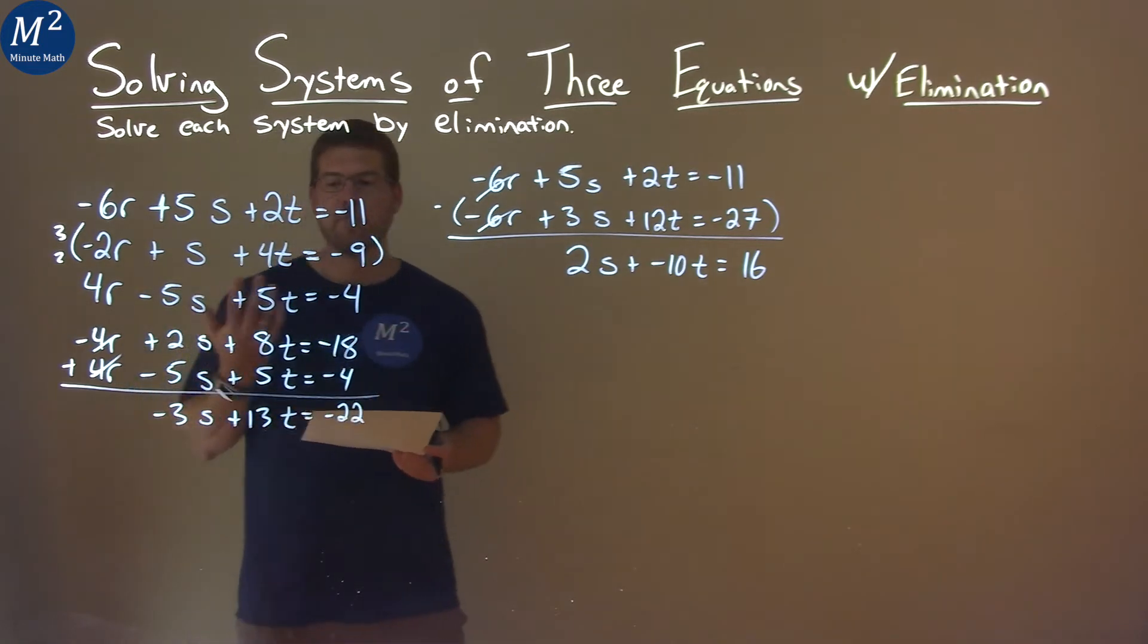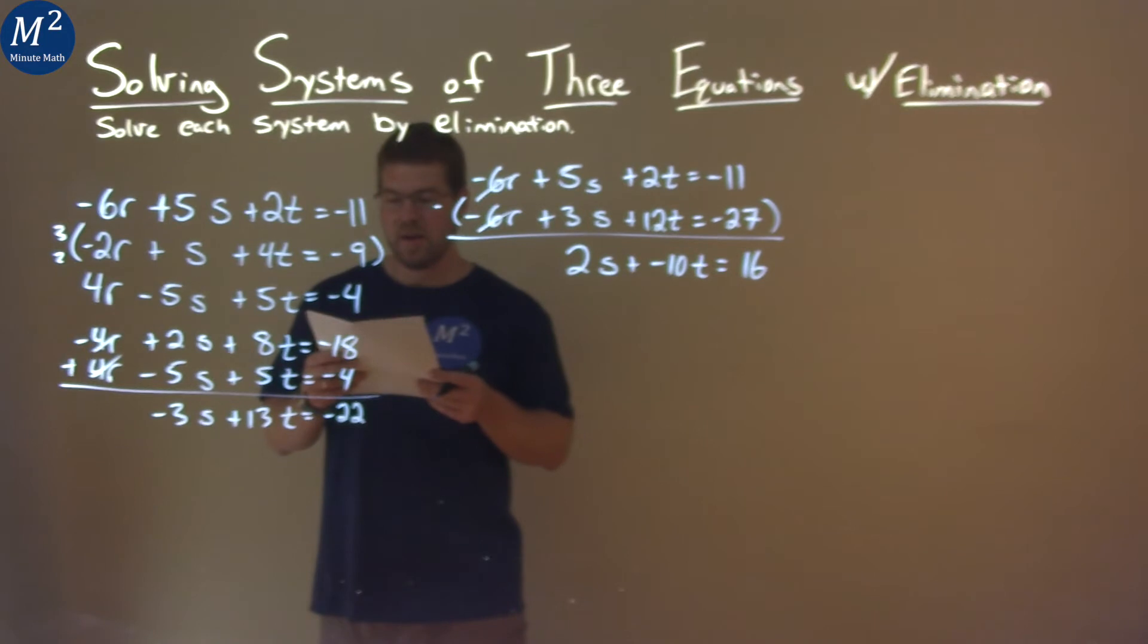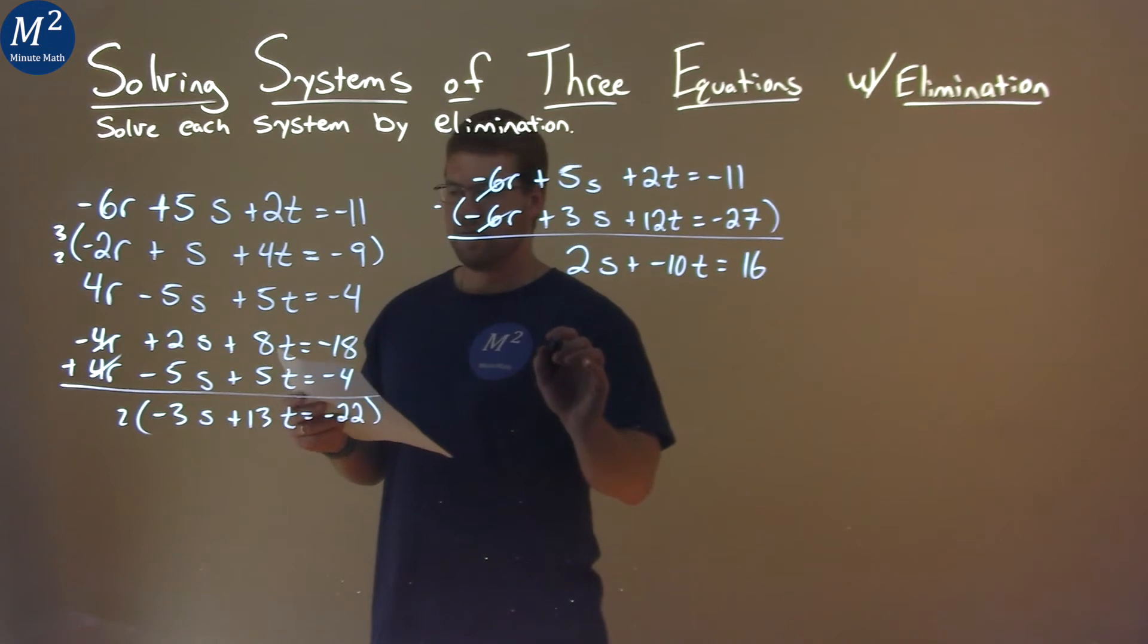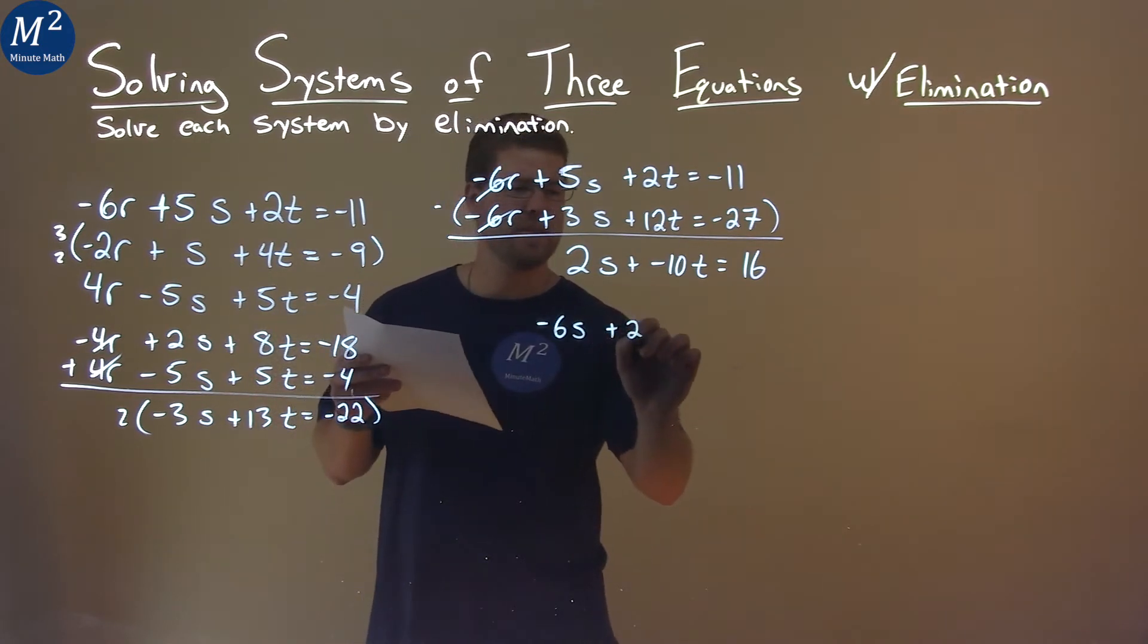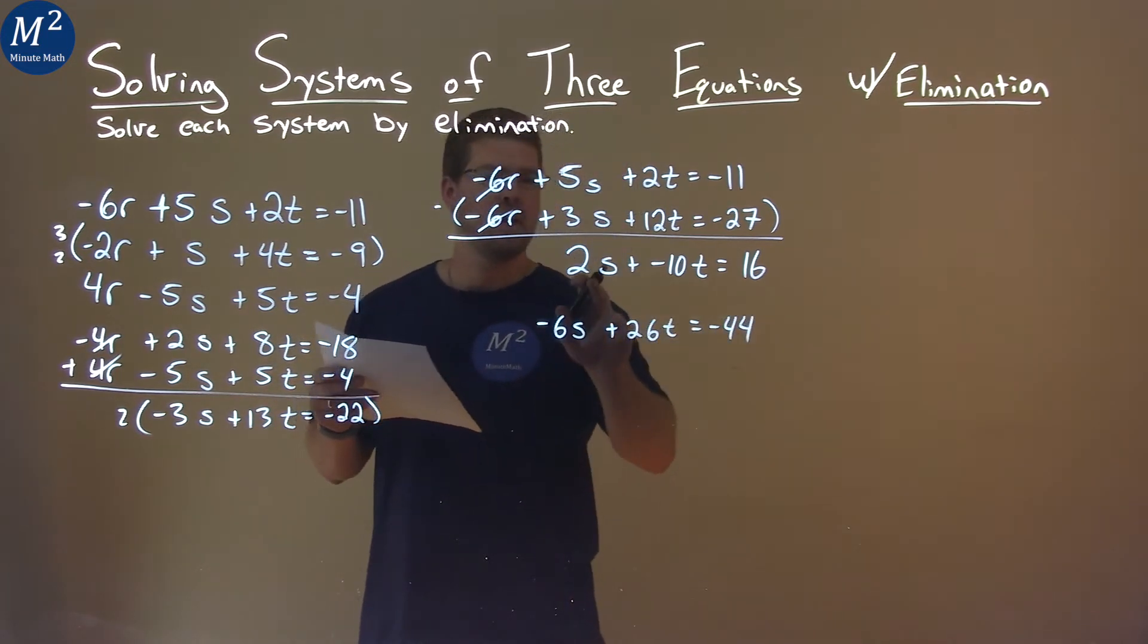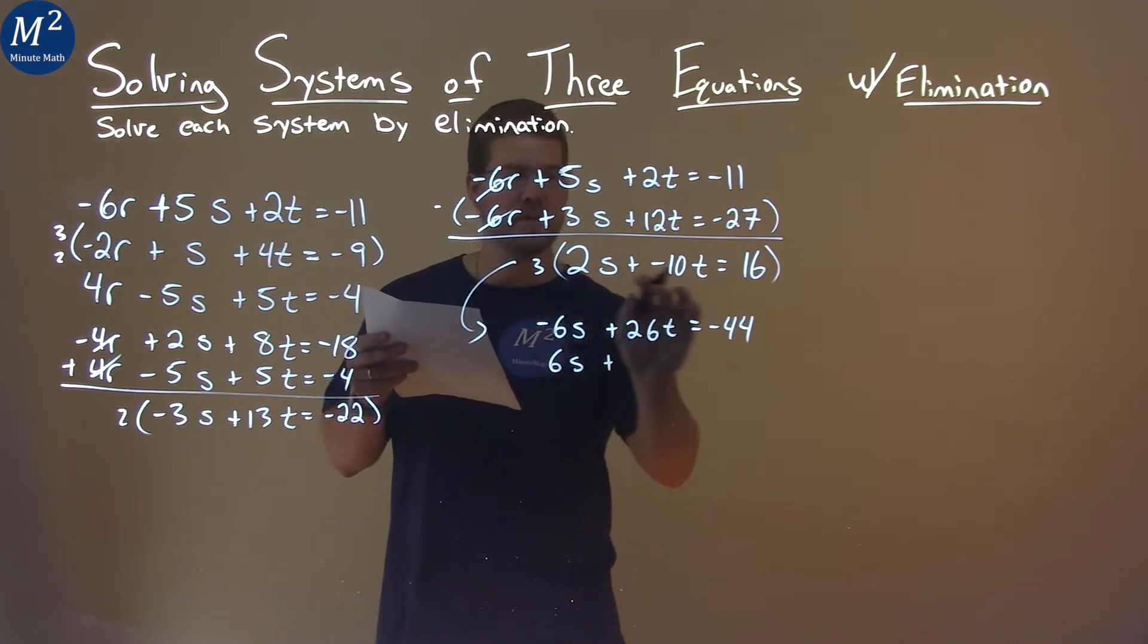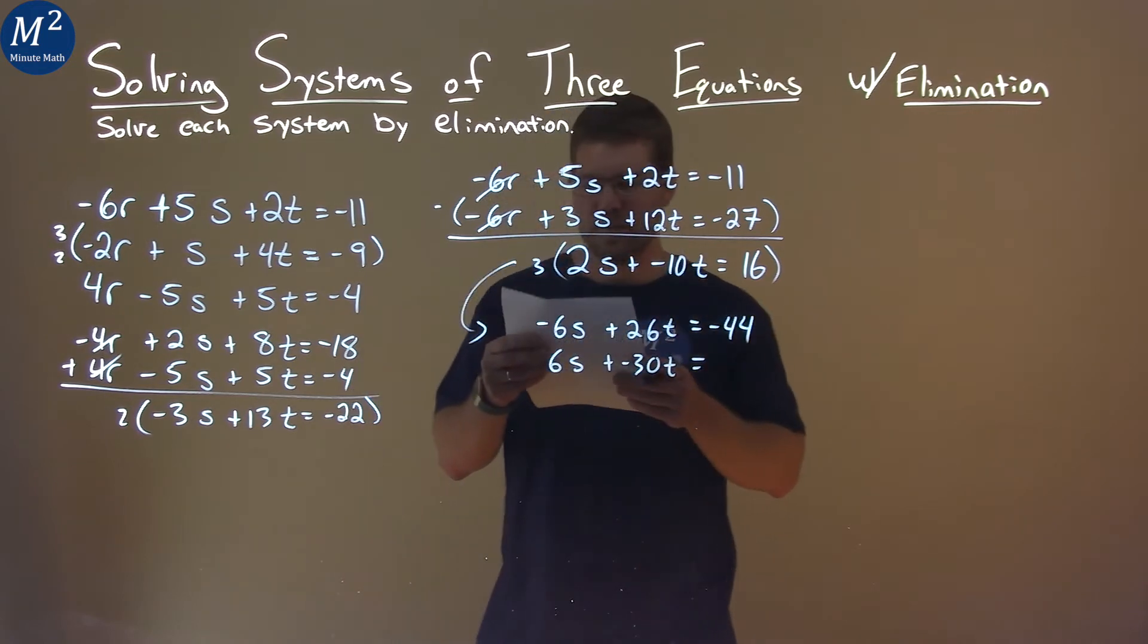So from here, where do we go? Well, these two equations right away, if I add them together I can't eliminate anything, but I can adapt them. If we take this equation right here and multiply it by 2, we have 2 times negative 3 is negative 6s, 2 times 13 is 26t, and 2 times negative 22 is negative 44. This equation here, what happens if we multiply it by 3? The whole thing comes down here: 3 times 2s is 6s, 3 times negative 10 is negative 30t, and 3 times 16 comes out to be 48.